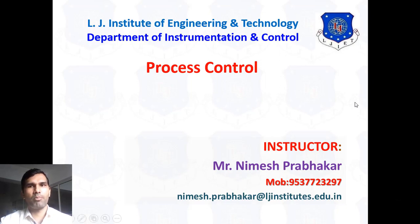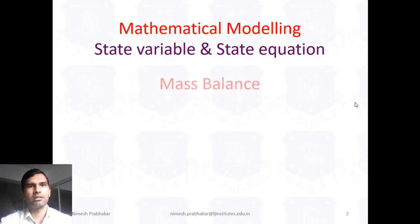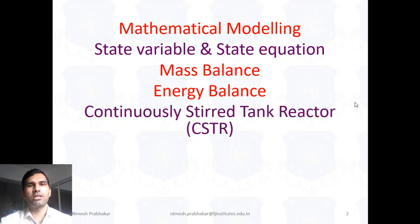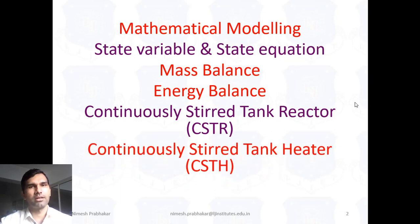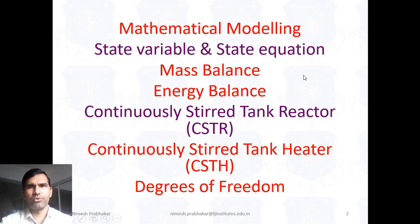The main important topics of Chapter 2 are: first, Mathematical Modeling; then State Variable and State Equation; then Mass Balance and Energy Balance Equation; next is Continuously Stirred Tank Reactor (CSTR) and Continuously Stirred Tank Heater; and last is the Degree of Freedom. The main important topics in this chapter are CSTR, CSTH, and Mass Balance and Energy Balance Equation.